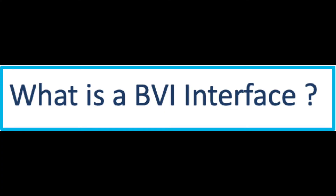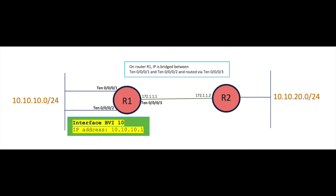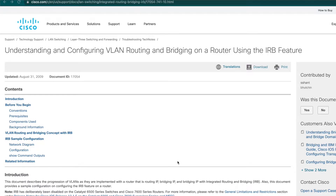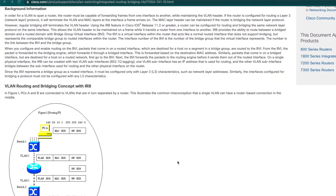Let us first start with understanding what is a BVI. A BVI means a Bridged Virtual Interface. It is an entity of a bridged domain. It acts as a gateway between the corresponding bridged domain to a routed interface within a single router. BVI provides a much more flexible solution for bridging and routing within a single router. It supports communication between multiple interfaces in the same bridge domain as well as different bridge domains. It interconnects bridged and routed networks. For other details on understanding the BVI interface, I would highly recommend visiting this article, which gives an understanding of the feature in great detail.